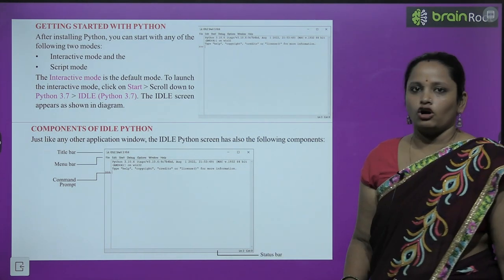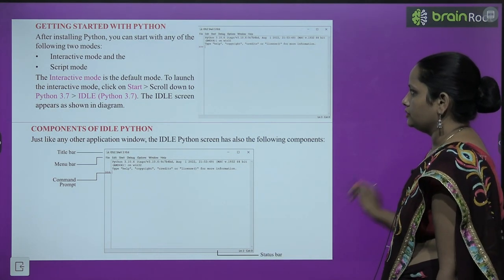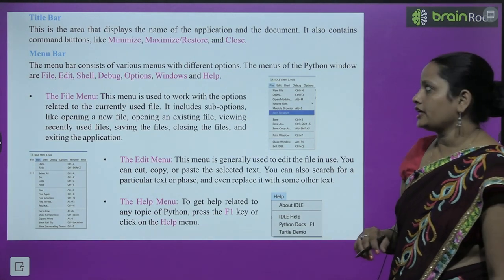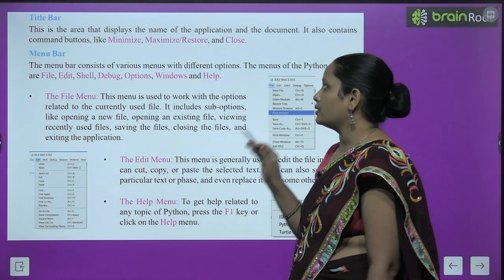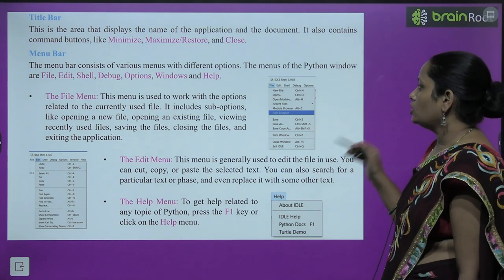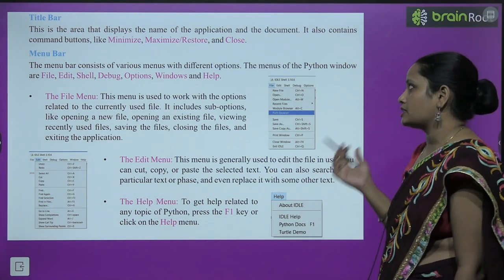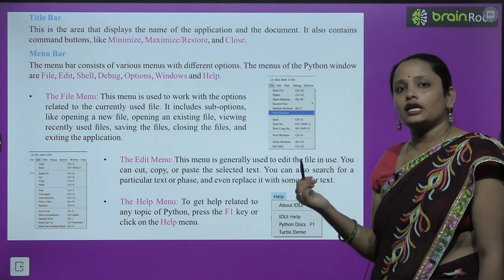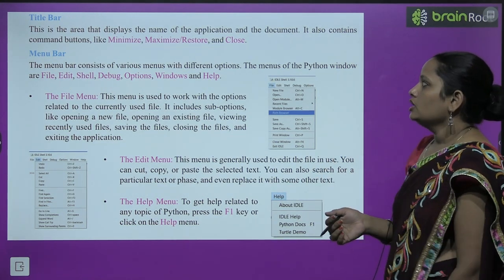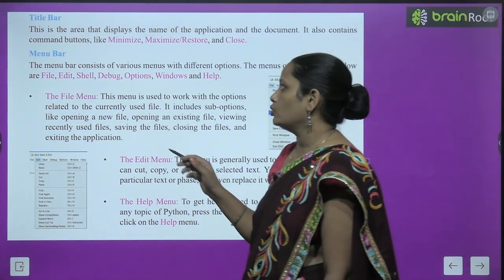At the bottom you can see the status bar, which shows lines, columns, and other information. The title bar is the area that displays the name of the application and the document. It also contains buttons like minimize, maximize, restore, and close.